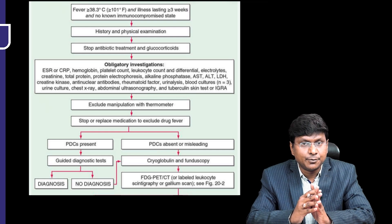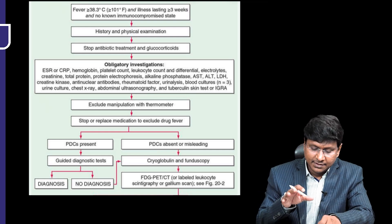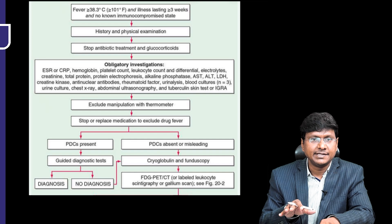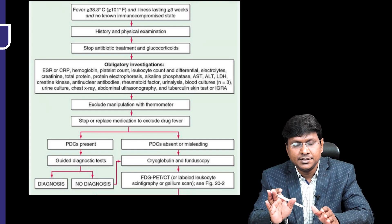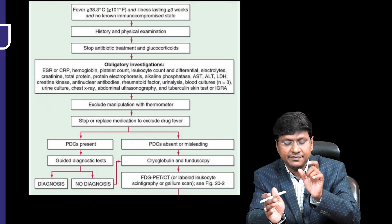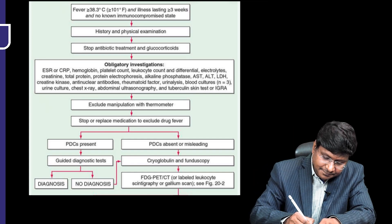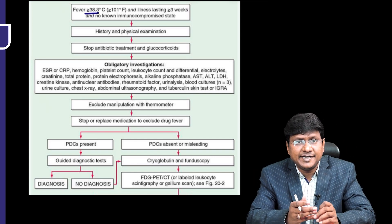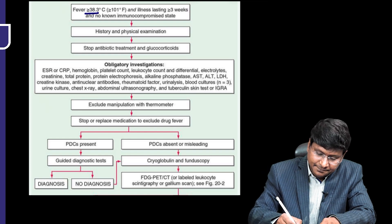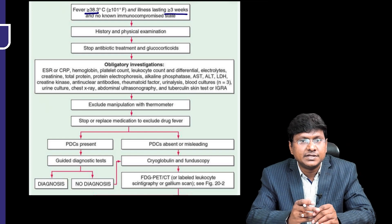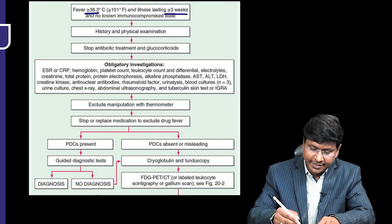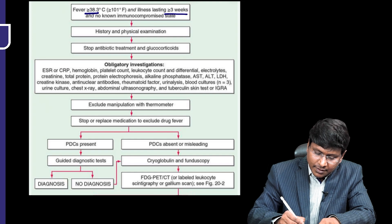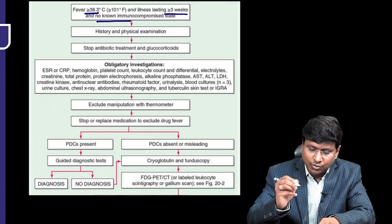If you see this flowchart, it outlines the diagnostic approach of fever of unknown origin in patients who have had a fever of more than 38.3 degrees centigrade lasting for more than or equal to 3 weeks without an identified cause in an immunocompetent individual — no immunocompromised patients.